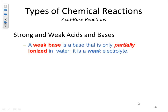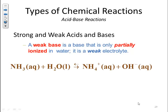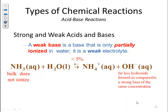A weak base is a base that is only partially ionized in water — it is a weak electrolyte. Something like ammonia breaks up far less than a strong base; less than 5% ionizes, and the bulk stays as whole NH3. So I'm going to have far less hydroxide formed compared to the strong base at the same concentration. If I had a 0.1 M solution of sodium hydroxide versus a 0.1 M solution of ammonia, I'm going to have a far greater amount of hydroxide in the sodium hydroxide than in the ammonia solution.